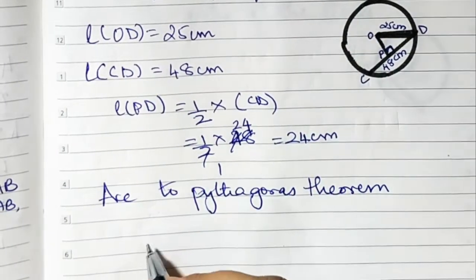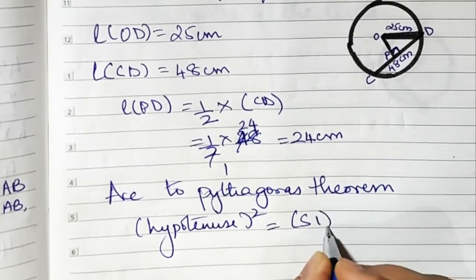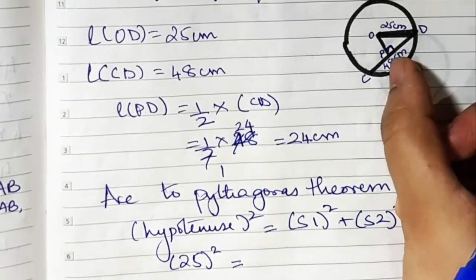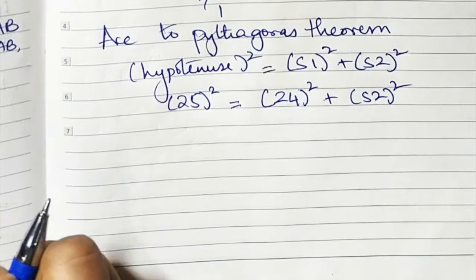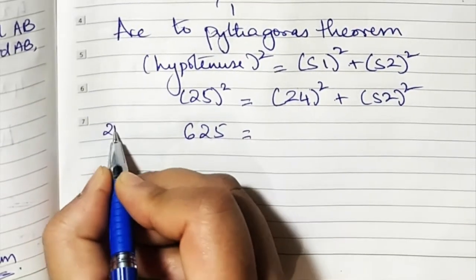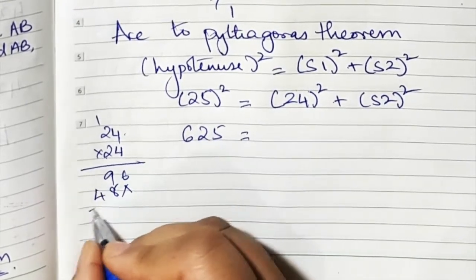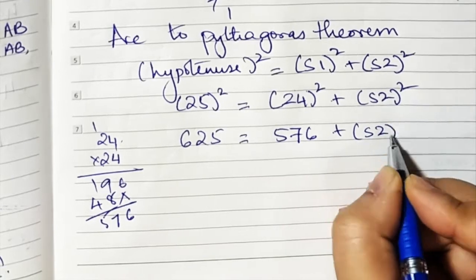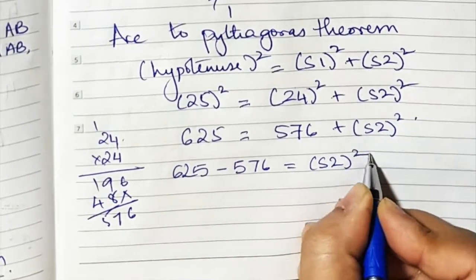According to the Pythagorean theorem: hypotenuse squared equals side one squared plus side two squared. The hypotenuse is OD = 25, so 25 squared equals 24 squared plus OP squared. 25 squared is 625, and 24 squared is 576. So 625 = 576 + OP squared.